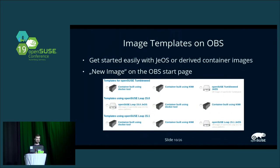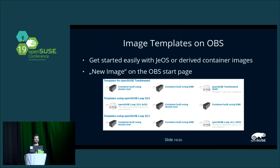The good thing is you don't have to write such an XML file from scratch, and you don't have to take care of the OBS project configuration either. You can just go to build.opensuse.org, click on new image after you're logged in, and then you have a selection where you can choose, for instance, I want an image based on Leap, I want to build a derived Docker container using Kiwi, or I want to build a container using a Dockerfile.